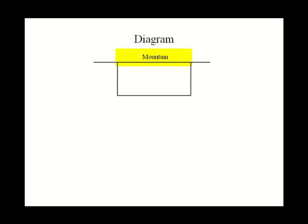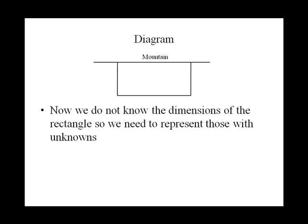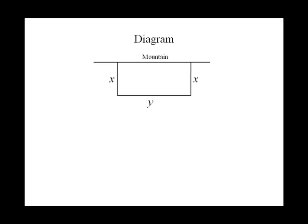So here's our diagram. We have the mountain on one side and then our rectangular fence. Now we don't know the dimensions of the rectangle, so we'll represent those with unknowns. So perhaps we use x and y.